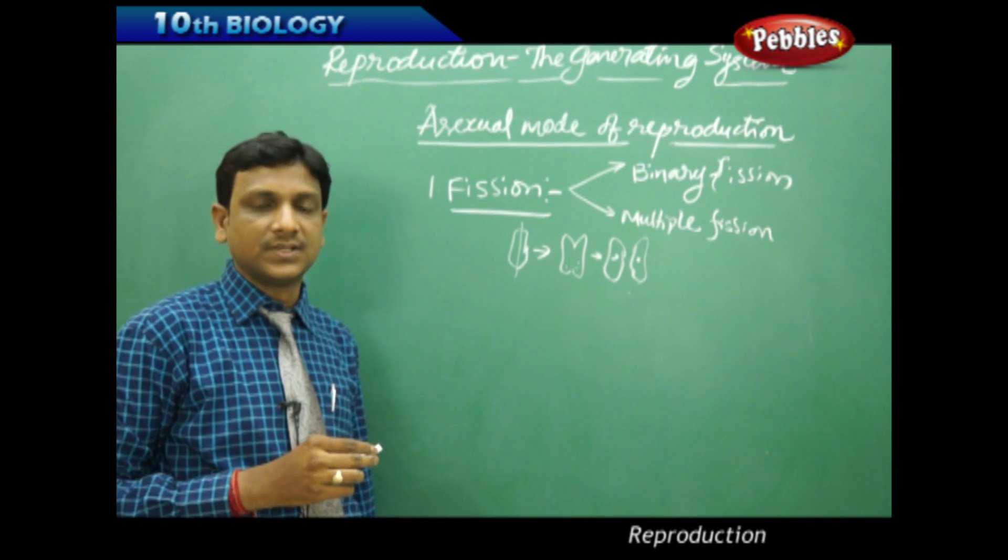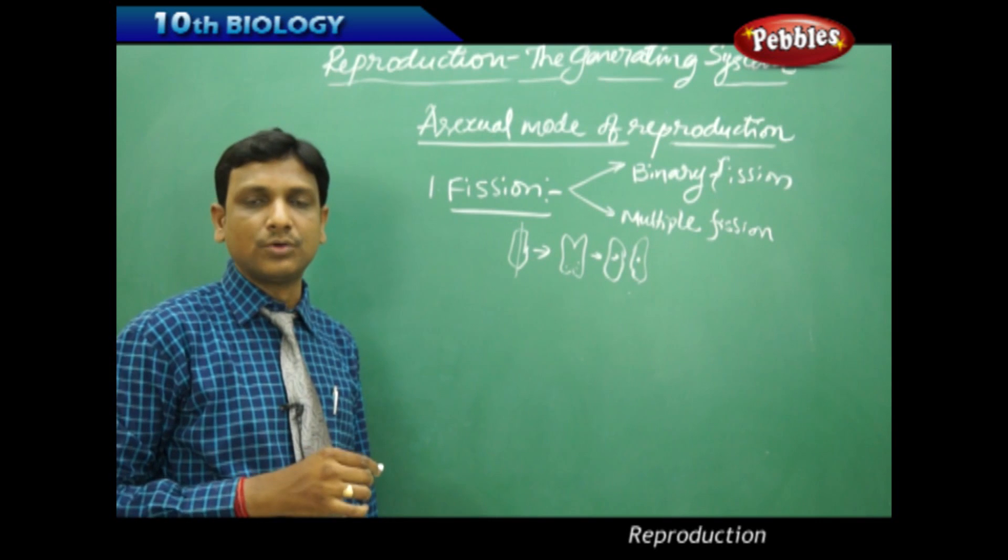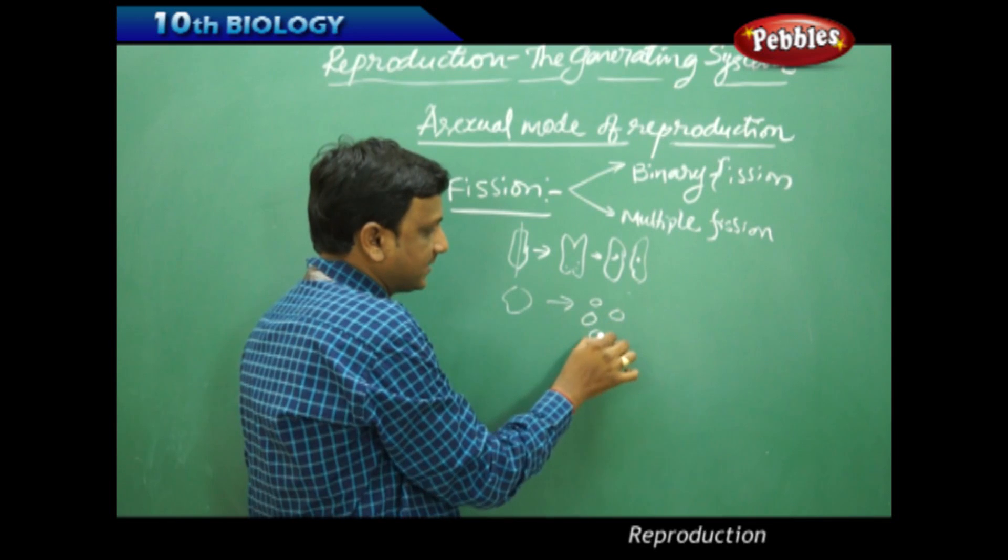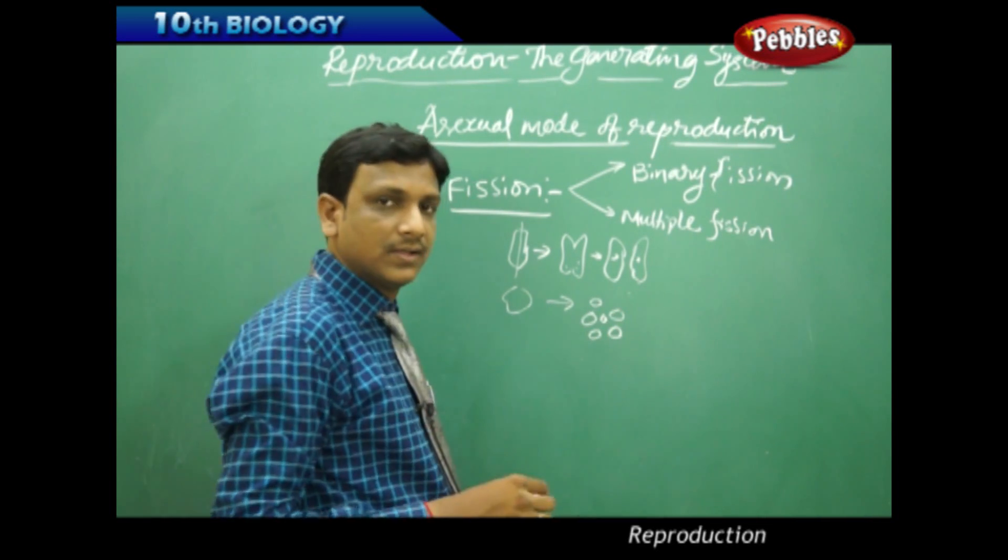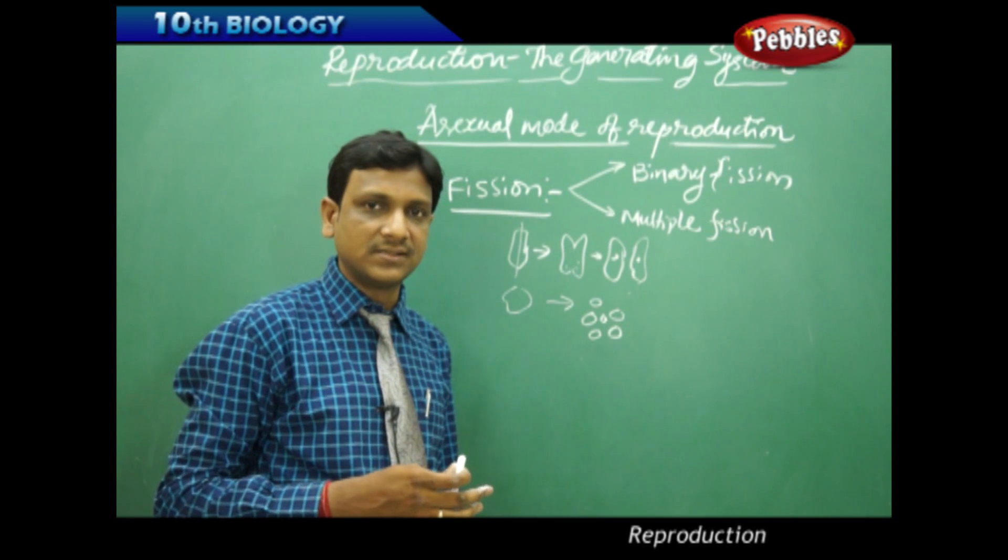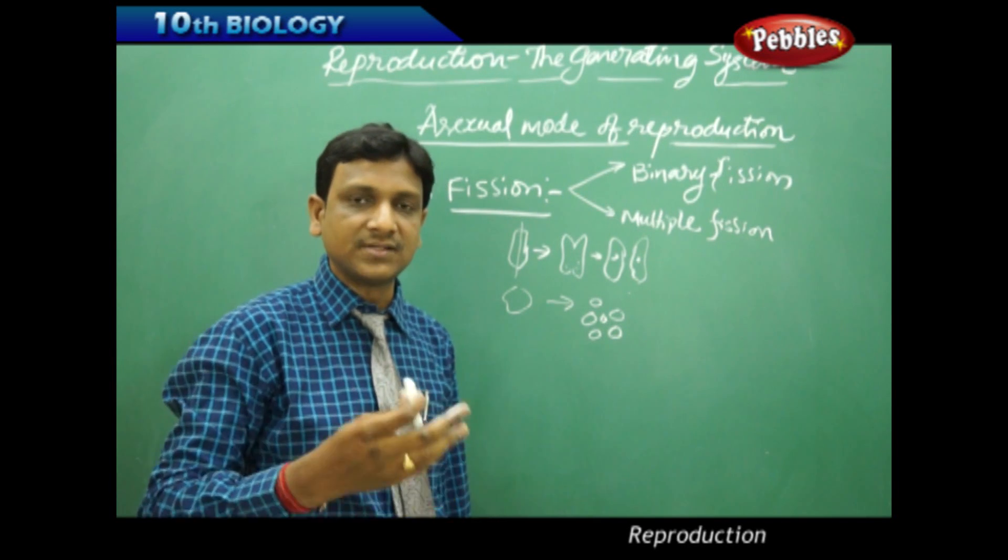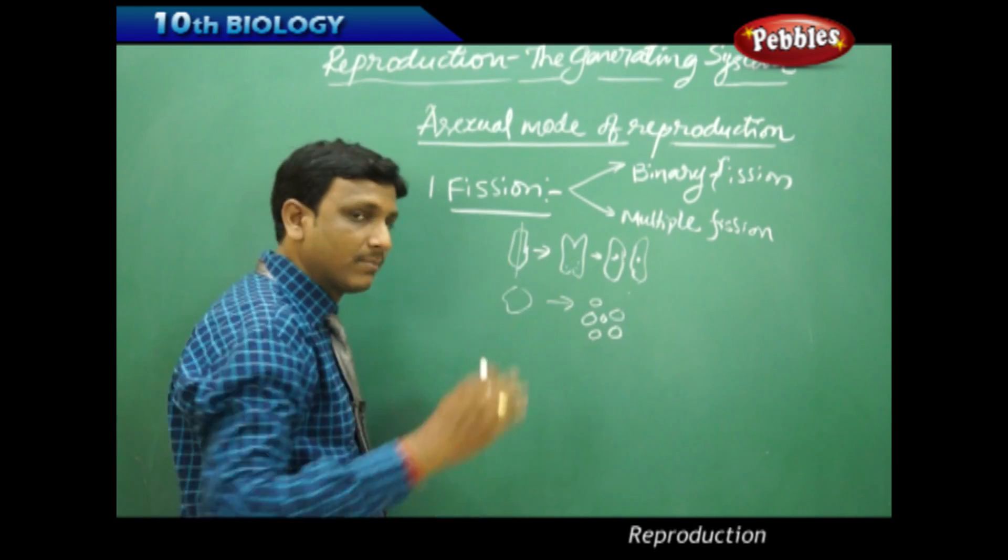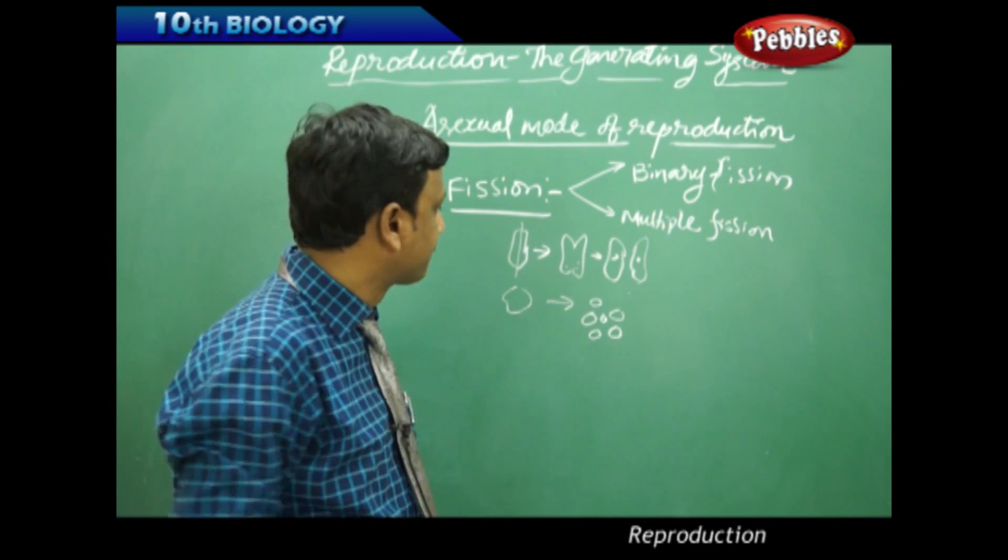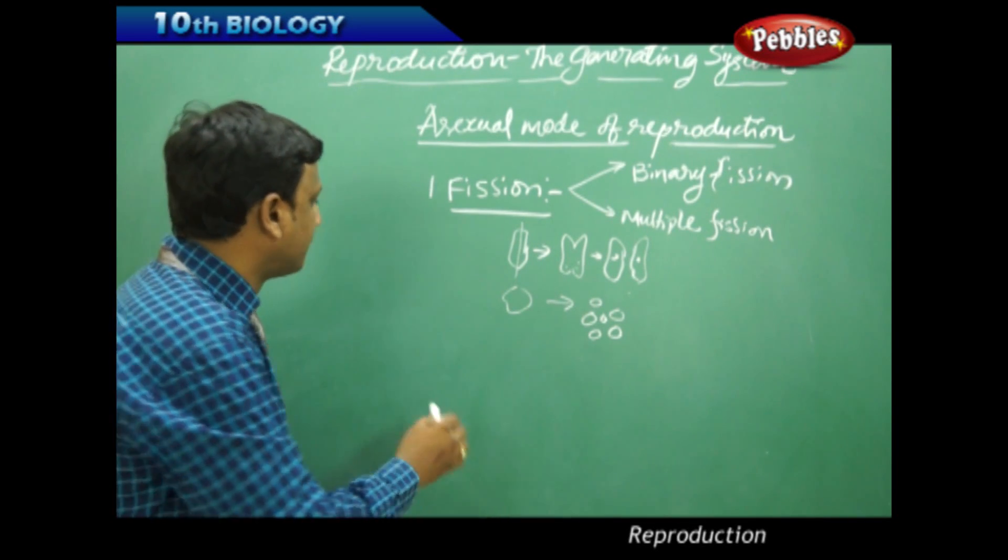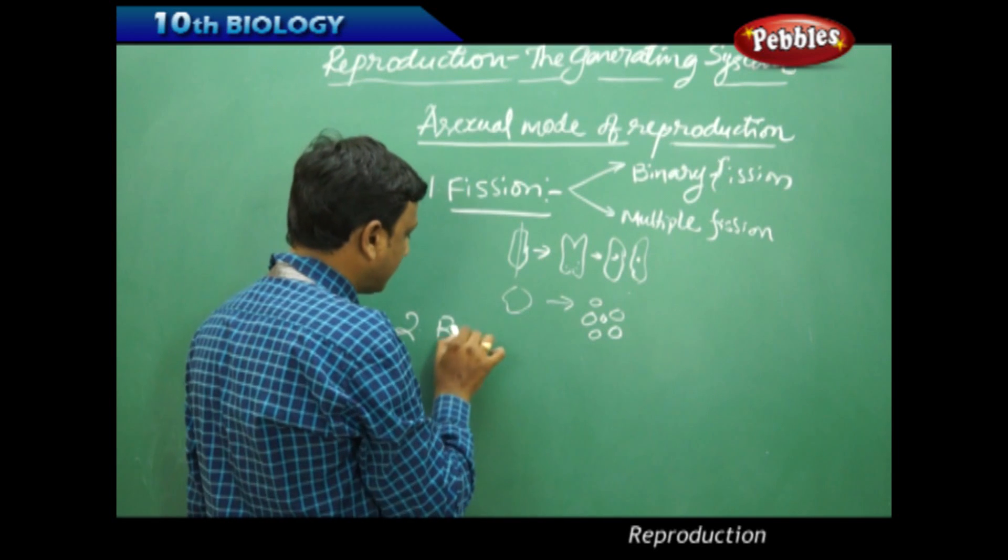In some protozoans, a single organism is divided into a number of small organisms - this is multiple fission. In both cases, the parent will not exist after the process of division. Here the parent is divided into a number of individuals, so there is no parent. The second method is budding.